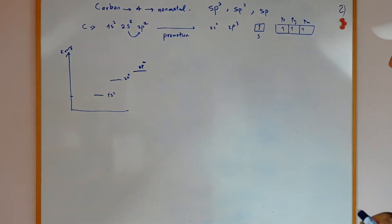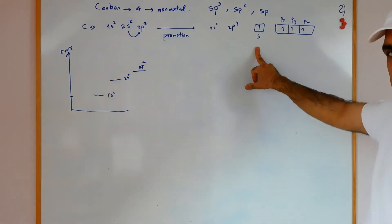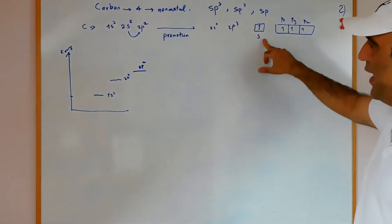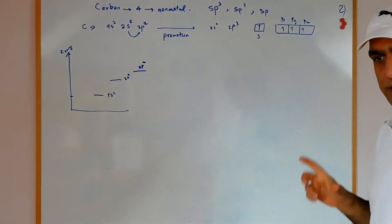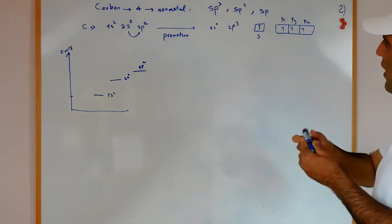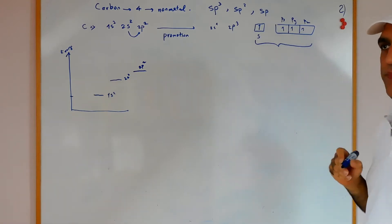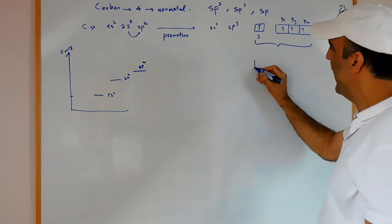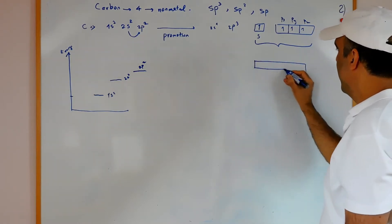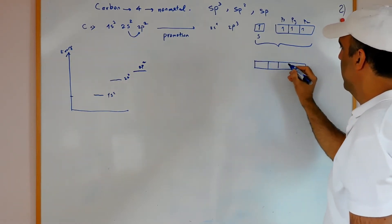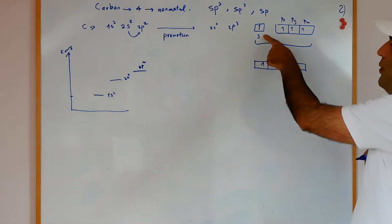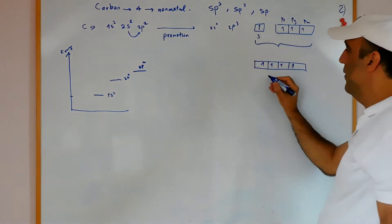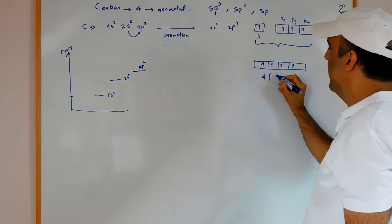Now we have one s orbital and three p orbitals which are called px, py, and pz. The orbital shapes are different - s is circular but p is bigger and biconcave. If we hybridize these four orbitals and divide them into the same size, because it formed from 1s and 3p, we call this sp3.